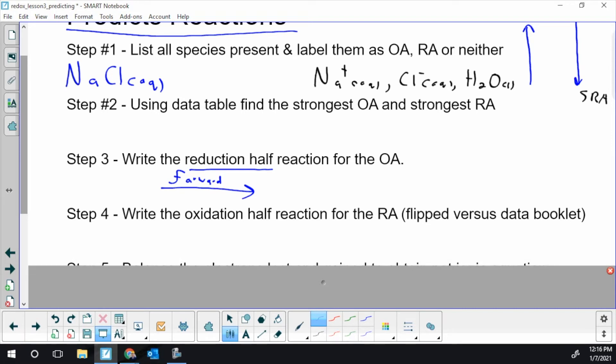Next, you're going to write the oxidation half reaction for your RA. But we've got to flip it now. Your table is all reductions to get the oxidation. You've got to look at the reverse reaction and write it out backwards. If you go forward in that data table on page seven, it's a reduction. As the heading says, if you go backwards, it's an oxidation.